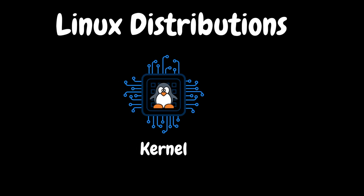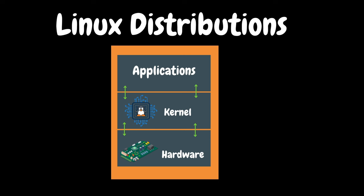Even though we have different distributions, one thing common among them is the Linux kernel. Basically, it is the core of the operating system. It is a layer that sits between the hardware and the applications. It manages the system's hardware and resources such as the CPU, memory, etc. The kernel acts as an intermediary between software applications and the hardware, ensuring that processes are executed efficiently and securely.